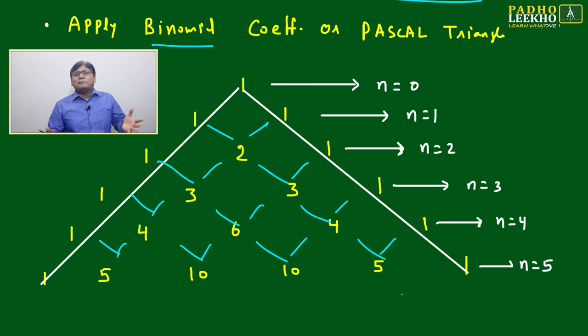Pascal made a very big triangle - up to n equals 100, 200. For any expansion you want, just go horizontally and take it.